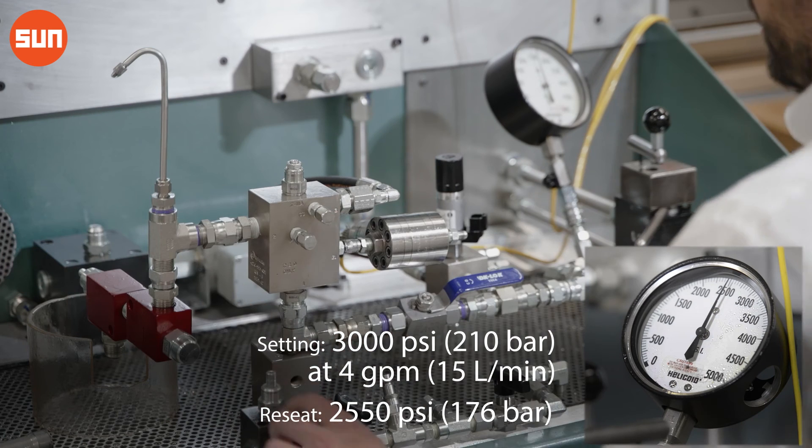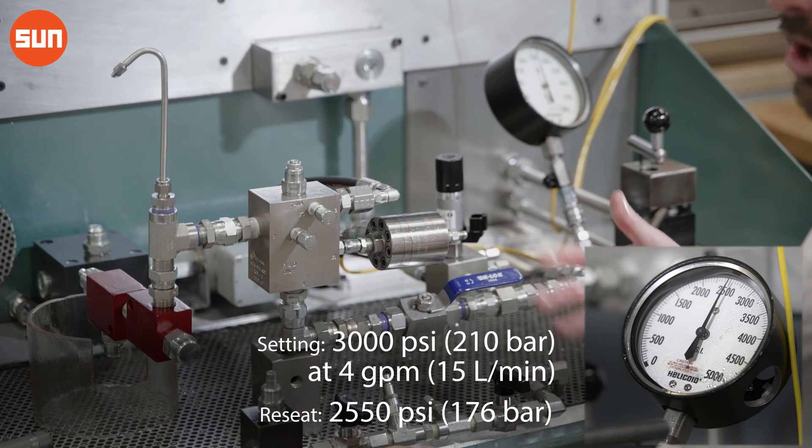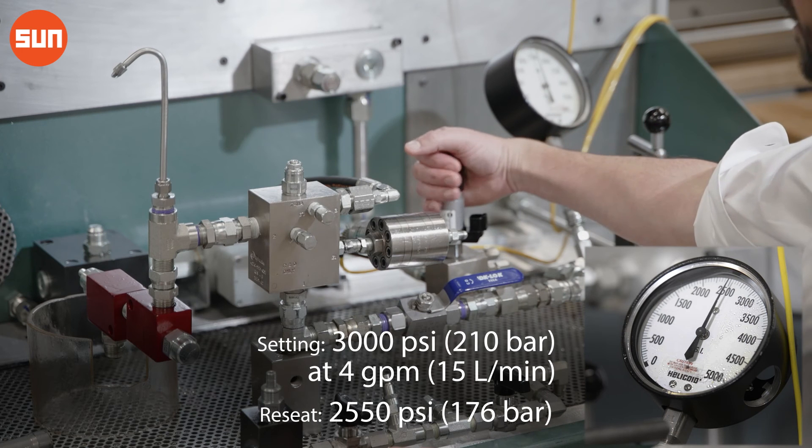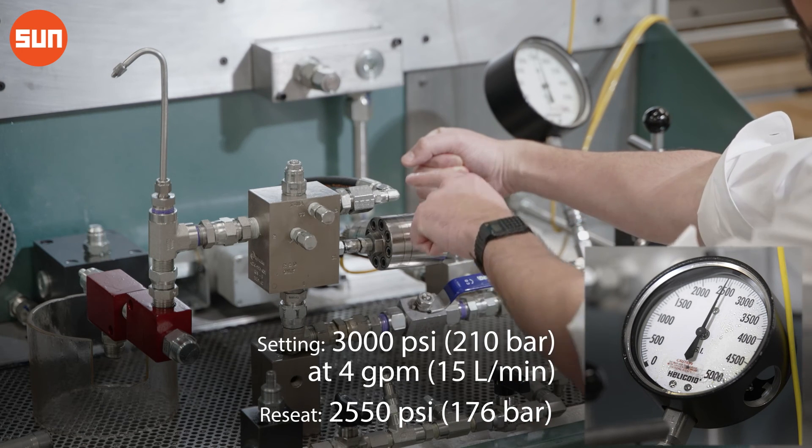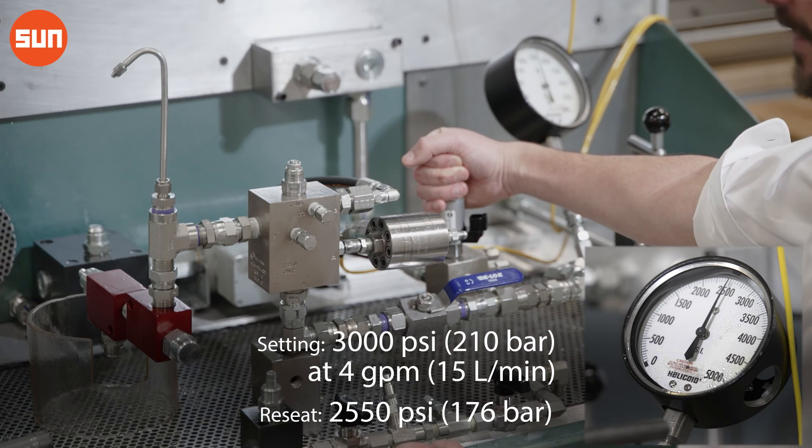The valve has shut off and now we're going to verify our pilot stage. I'm going to actuate the sun switching valve. That is going to divert flow to port three and open the counterbalance valve.